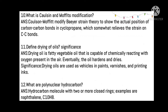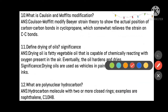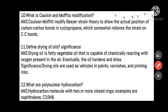What is Coulson-Moffitt's modification? It is a substitute for the Baeyer strain theory to show the actual position of the carbon-carbon bonds in cyclopropane, which somewhat relieves the strain on those bonds. It is used to treat the limitations of the Baeyer strain theory and to identify or relieve the strain of carbon-carbon bonds in cyclopropane.